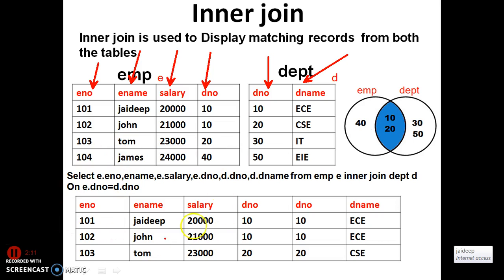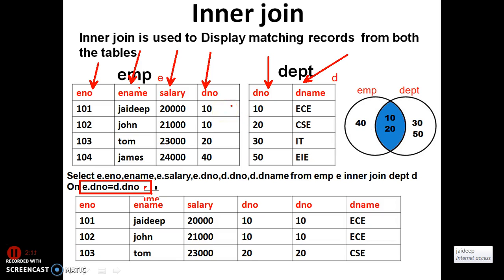How does this query execute? First it checks the syntax, then it checks the ON condition. If the condition is true, then only it will execute the query and fetch the data. For example, E.D_number is 10, D.D_number is 10 — 10 equals 10, condition is true, so retrieve that record.